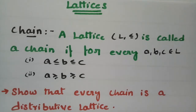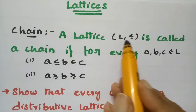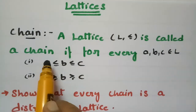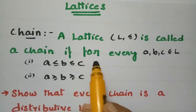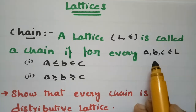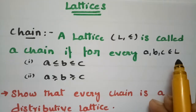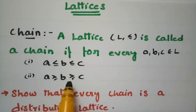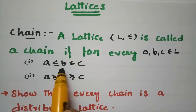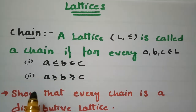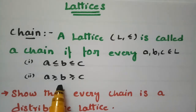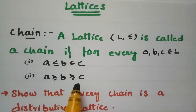In today's video, I am going to discuss the properties of lattices. Here is the chain property. A lattice L (≤) is called a chain if for every element A, B, C belonging to the lattice, there holds two conditions: A ≤ B ≤ C, or A ≥ B ≥ C. This is the chain property.